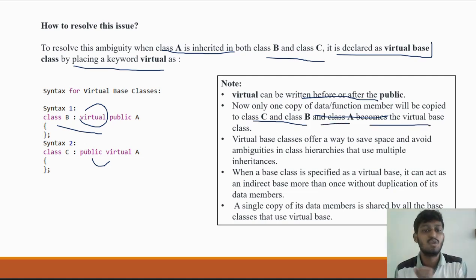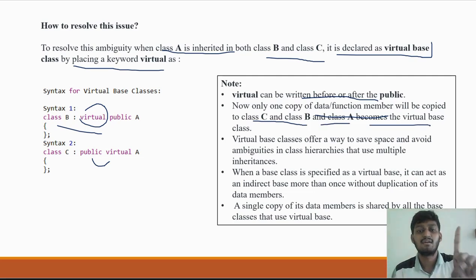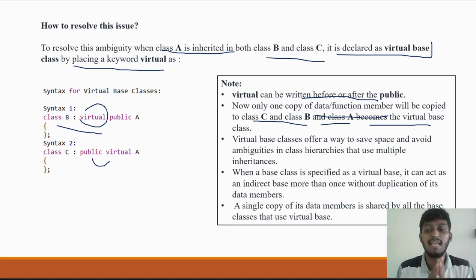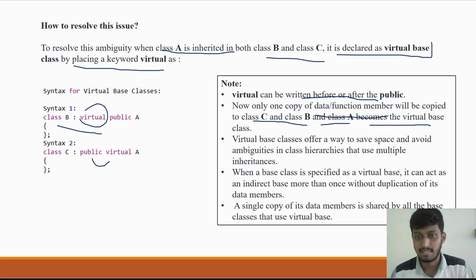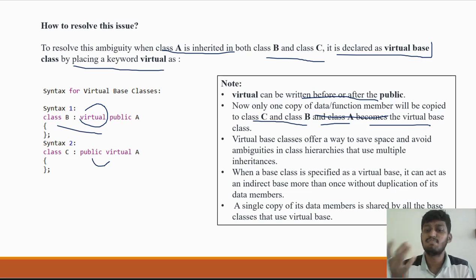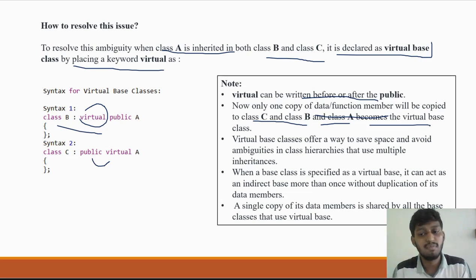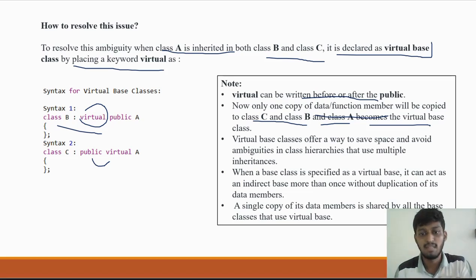When we declare class A as virtual, then C and B will share only one copy of A's data. Our class A becomes a virtual base class. The ambiguity will be removed and resolved.